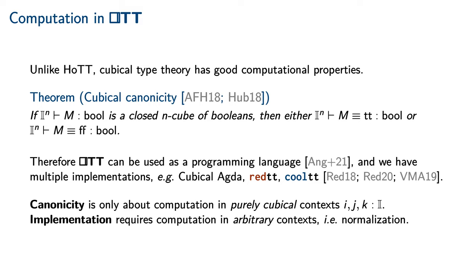While cubical canonicity is a significant syntactic result, it is unfortunately not pertinent to the implementation of cubical type theory. This is because a type checker or an elaborator will almost never encounter a term that depends only on variables of interval sort. In fact, one must characterize equivalence classes of terms in arbitrary contexts, a result referred to as normalization.